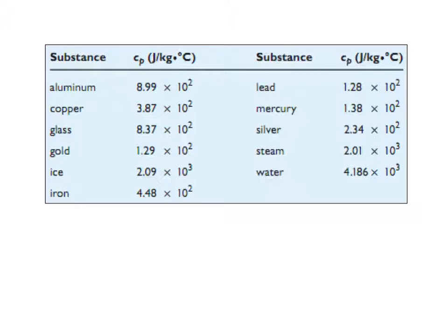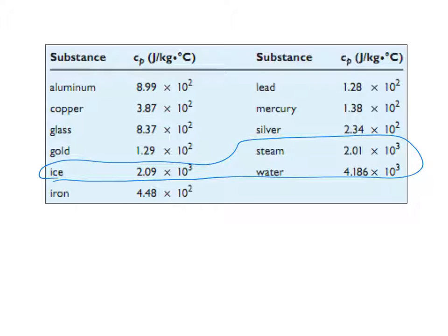Materials have different C values at different phases. In this table we see most things as a solid — this is assuming STP, standard temperature and pressure. At STP, substances like aluminum, copper, glass, gold, ice, iron, lead, mercury, and silver are all solids. Steam and water are the same as ice, just in different phases. One is in the gas phase, one is in the liquid phase, one is in the solid phase — they're all H₂O.